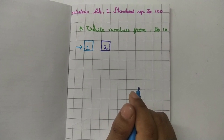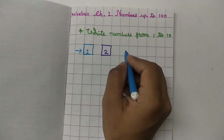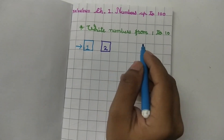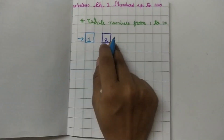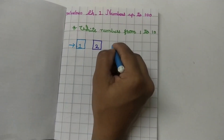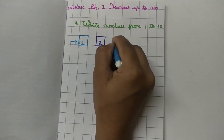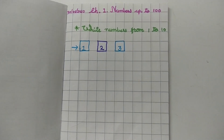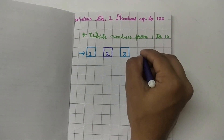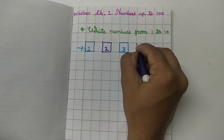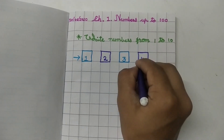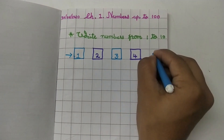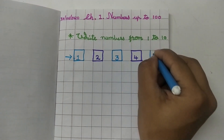See children, I am writing with sketch pen but you have to write with pencil only. Leave one box, after 2 write 3 this way. After 3, write 4. After 4, write 5 this way.